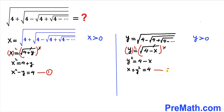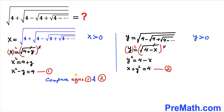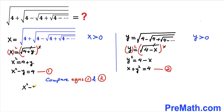Let's compare equations 1 and 2. The right-hand sides are both equal to 4, so we can equate the left-hand sides: x squared minus y equals x plus y squared. Moving y squared to the left and negative y to the right gives x squared minus y squared equals x plus y.